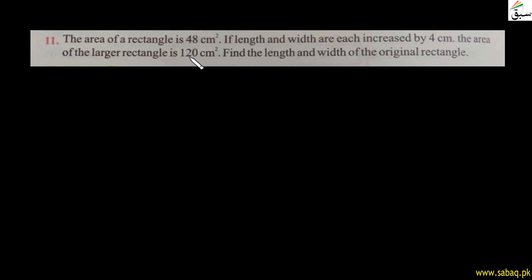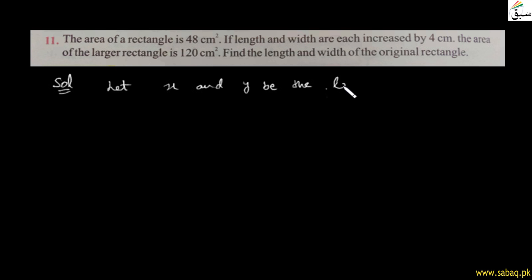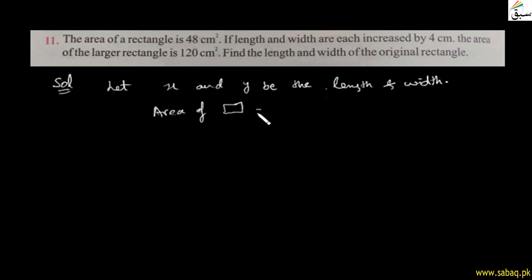Rectangle کا area 120 cm² ہے۔ Original rectangle کی length and width find کرنی ہے — suppose کریں x and y be the length and width of the original rectangle۔ Area formula: length × width = x × y = 48 — یہ equation 1 ہے۔